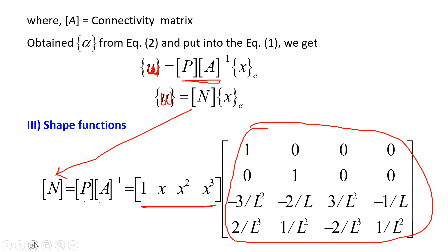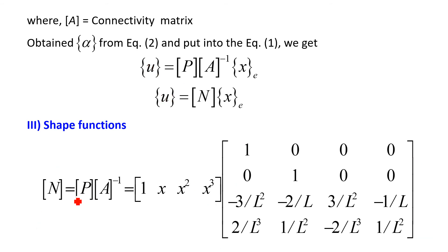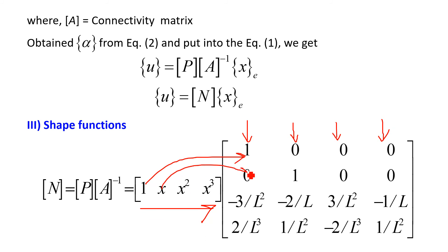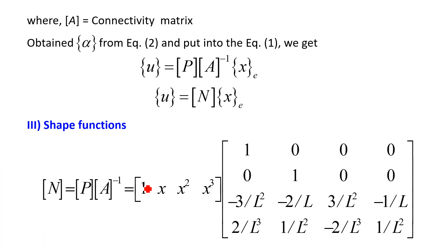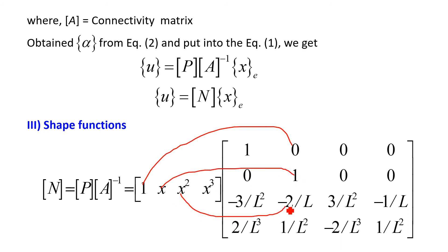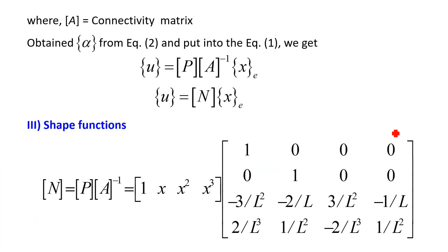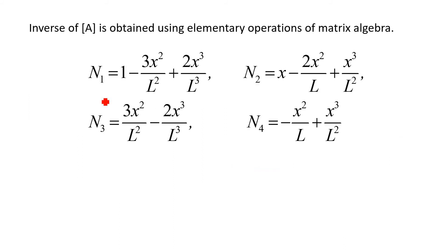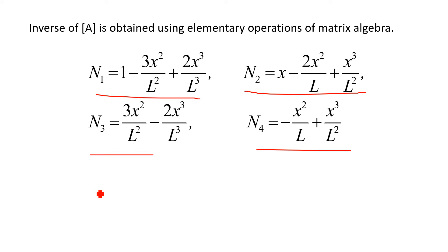Using elementary operations, A inverse is obtained. Multiplying the parametric matrix row with each of the 4 columns gives the 4 shape functions. For example, N1 equals 1 minus 3x square over L square plus 2x cube over L cube; N2 equals x minus 2x square over L plus x cube over L square; N3 and N4 are derived from the remaining columns. These are the four shape functions for the beam bending element.